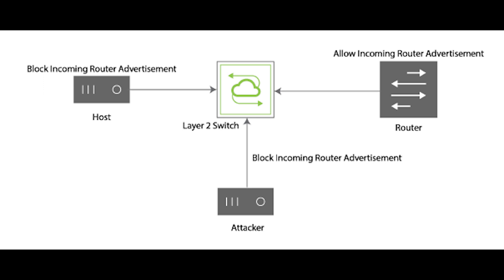Once the Layer 2 device has validated the content of the RA frame and router redirects the frame against the configuration, it forwards the RA to the unicast or multicast destination. If the RA frame content is not validated, the RA is dropped.